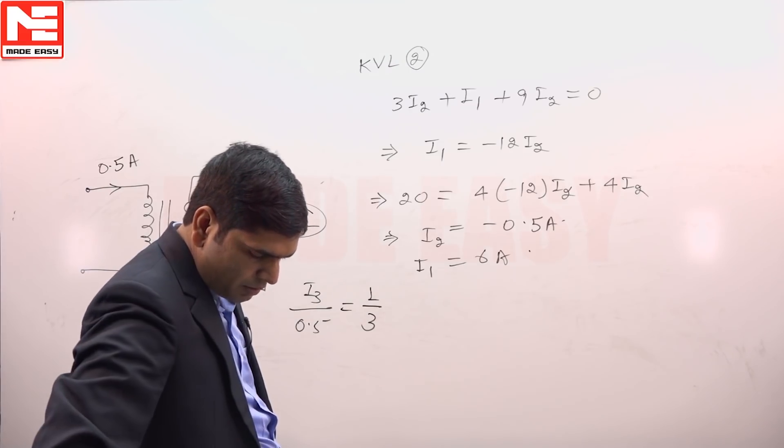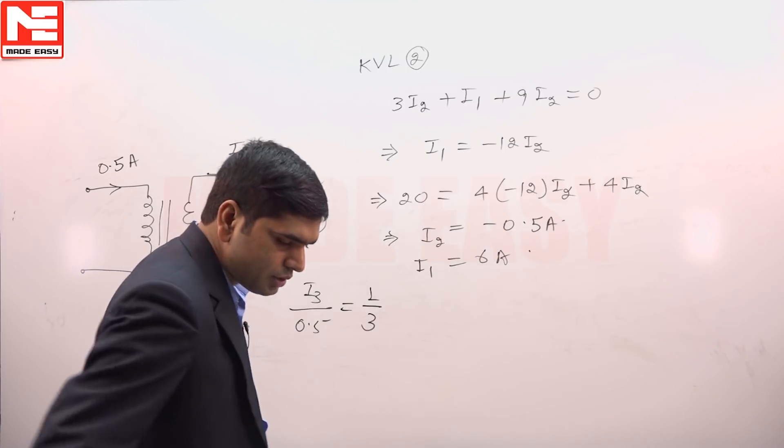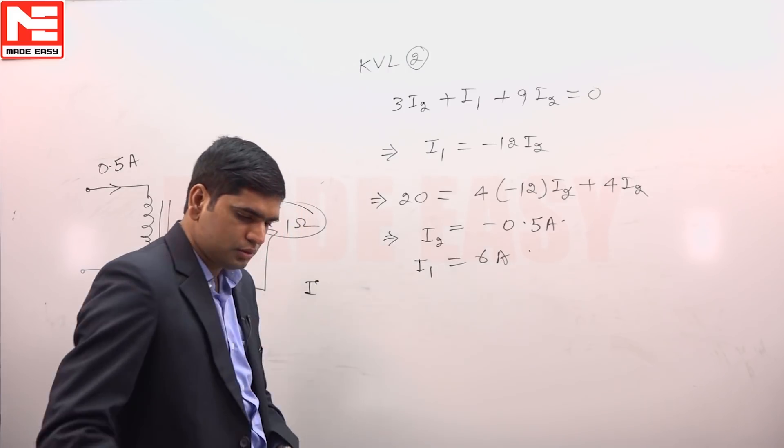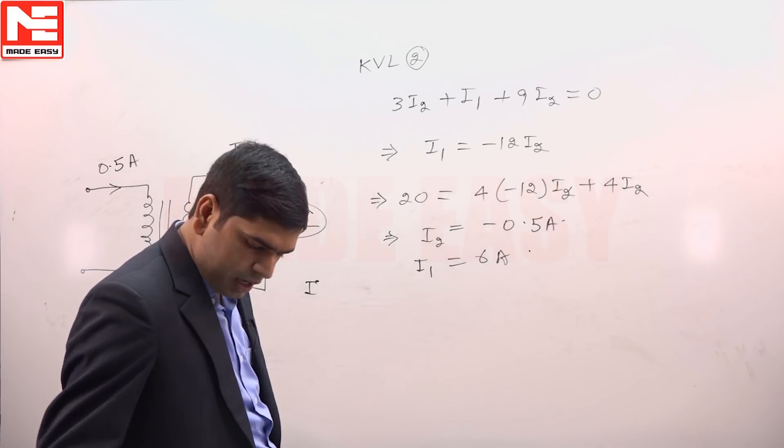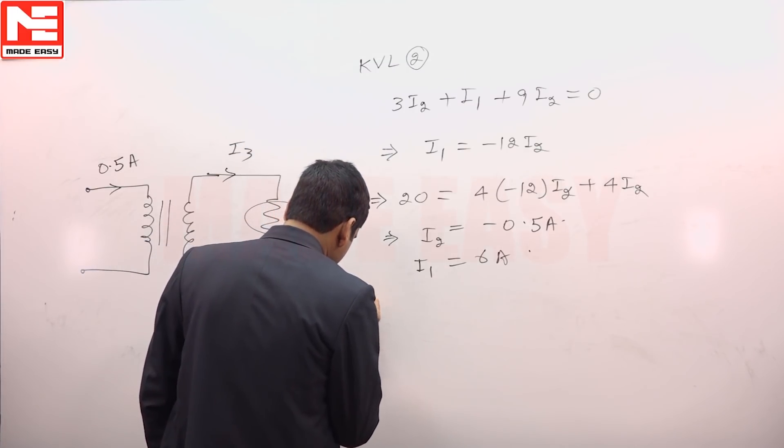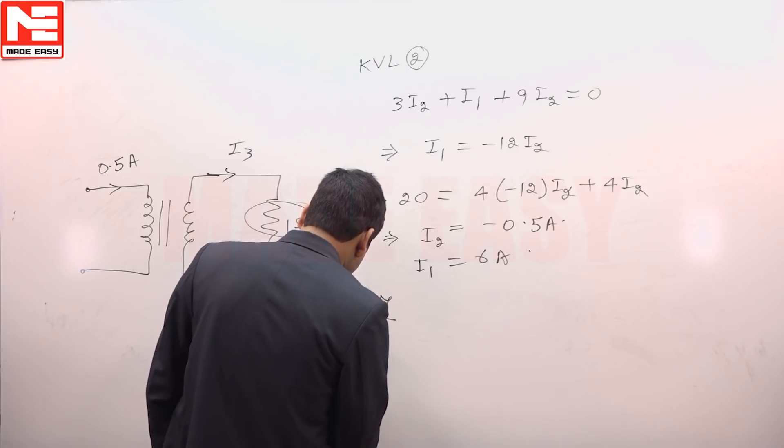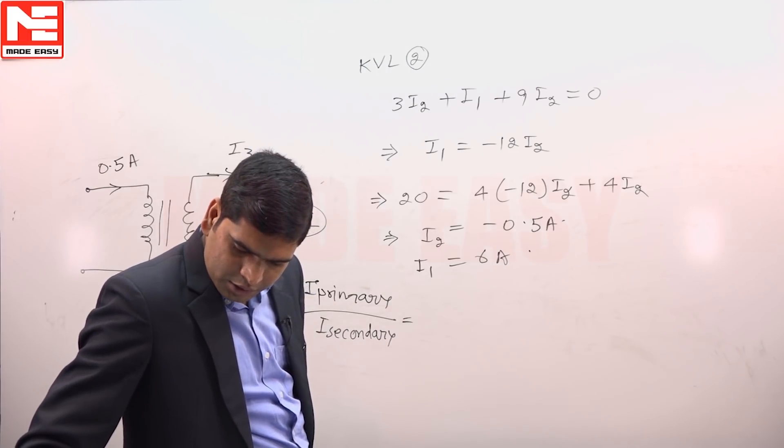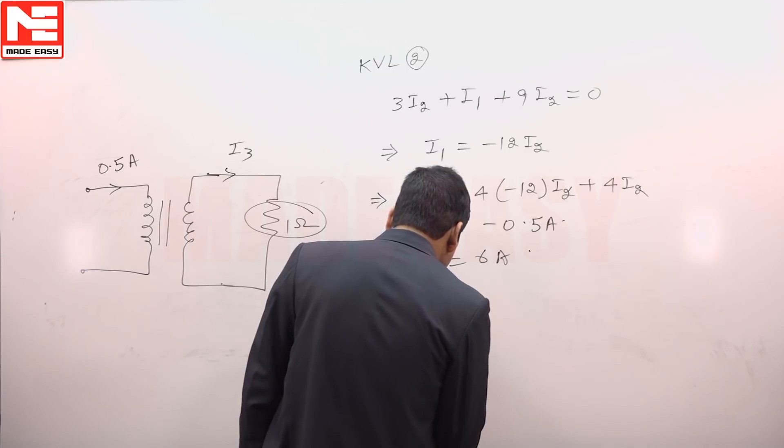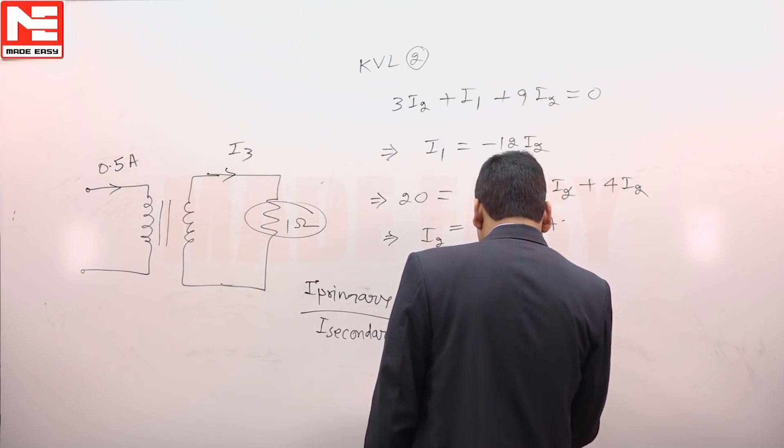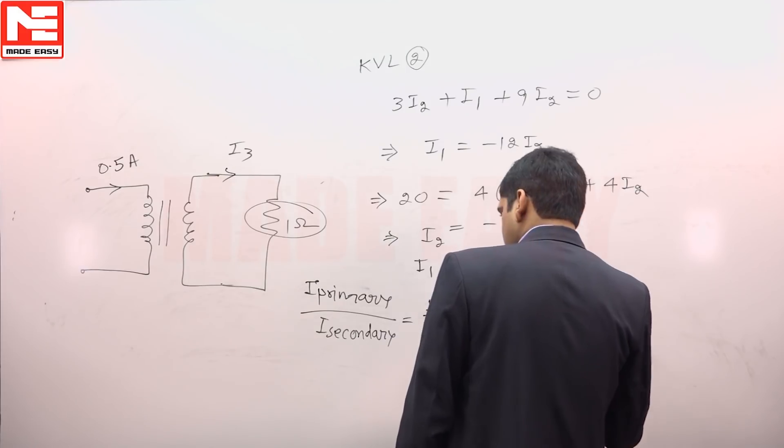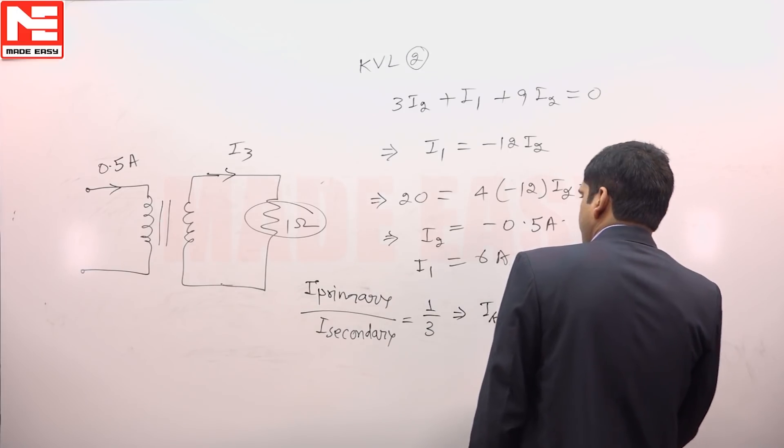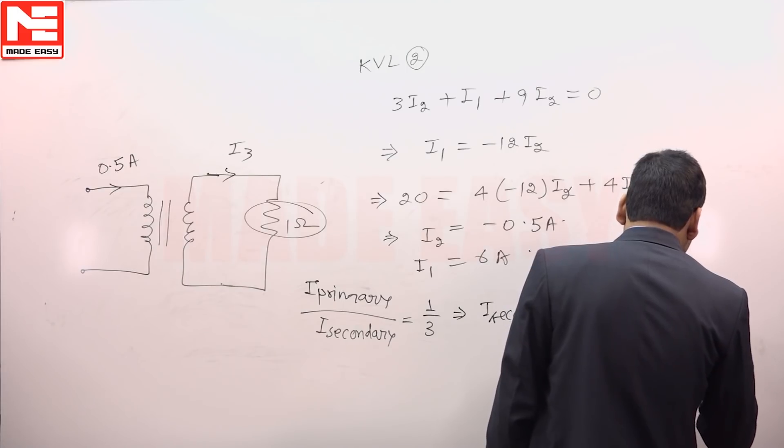From this we will have relations: I primary divided by I secondary, this will be equal to turn ratio. Turn ratio is given 3 ratio 1, so it will become I2 by I3. So I secondary is equal to 3 into I primary, and I primary we have calculated 0.5, so 3 into 0.5 is equal to 1.5 ampere.